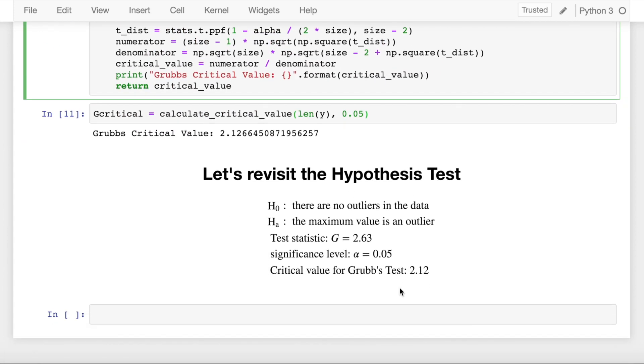So we have defined the null hypothesis that there are no outliers in the dataset. Alternate hypothesis was defined as there is one outlier in the dataset. We computed the test statistic or G calculated which turned out to be 2.63. We are testing the test at 95% confidence interval or alpha of 0.05. So the critical value for 95% confidence or 5% alpha turned out to be 2.12. Since my test statistic is greater than my critical value, 2.63 is greater than 2.12, so I'll reject my null hypothesis and accept my alternate hypothesis which states that there is exactly one outlier in my dataset.